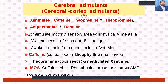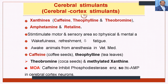Amphetamine (benzedrine) selectively stimulates the motor and sensory areas, increasing physical and mental wakefulness, reducing fatigue, and helping awaken anesthetized animals in veterinary medicine. Caffeine is from coffee, theophylline is from tea, and theobromine is from cocoa — all belonging to the category of methylated xanthines or methyl xanthines.